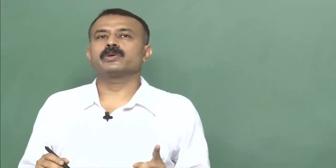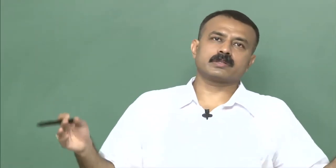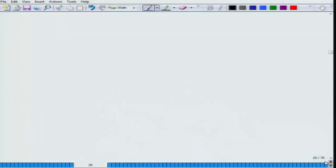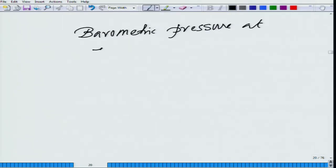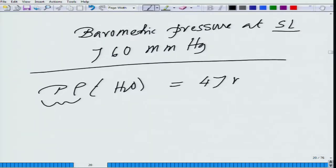What we will be doing here, we will be doing the calculation based on sea level, assuming atmospheric pressure of 760 mmHg. When the barometric pressure at sea level is 760 mmHg and the partial pressure of water vapor is 47 mmHg, under these values, if I ask you to calculate the partial pressure of oxygen — we know the oxygen concentration in air is 20.8 percent. The total partial pressure is denoted by Pb.